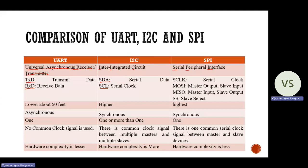In SPI, we have four signals. The first signal is SCLK — the serial clock signal. The next signal is MOSI, which represents master output and slave input; the master output signal is given to the input of the slave. Then MISO, which represents master input and slave output, where the master acts as the receiving point and the slave as the transmitting point. The fourth signal is SS, which means slave select — used to select the slave device.